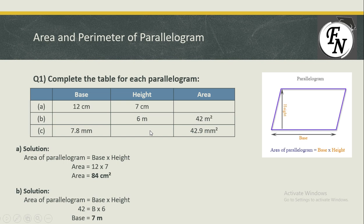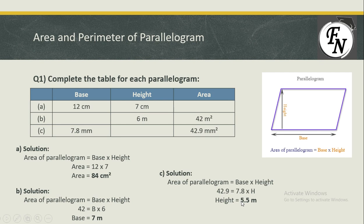For the third part, we have the base and area but height is missing. We plug in the area and base values; 7.8 divided on the left-hand side gives the answer as 5.5 meters for the height. Now, with all three values found, we fill in the table: 7 meters for the base, 84 centimeters squared for the area, and 5.5 millimeters for the height.